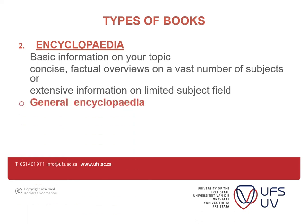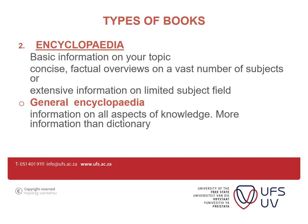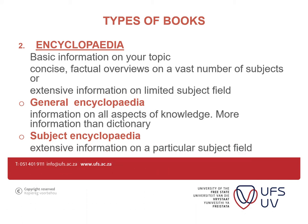We have two types of encyclopedia: general encyclopedia and subject encyclopedia. A general encyclopedia provides information on all aspects of language, entities, or information. A subject encyclopedia will help you to build or develop knowledge on the particular subject that you are studying, because it gives extensive information on a particular subject field.